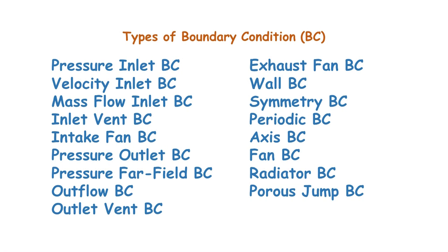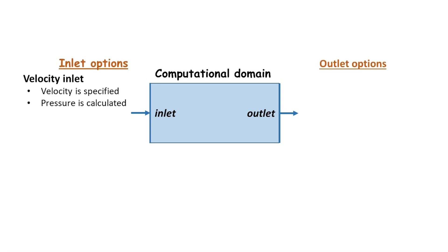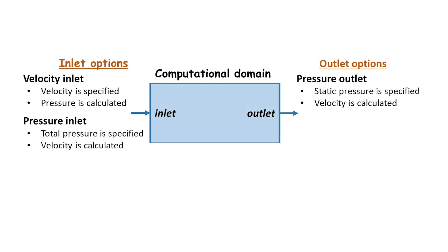Depending on the CFD package, there are several types of boundary conditions available. In this video I will only discuss those typically used in CFD modeling. Since the computational domain is treated as a control volume, it normally comprises one or more boundaries through which fluid enters or leaves the domain. The boundary conditions for these inflow and outflow boundaries are generally categorized as either velocity-specified conditions or pressure-specified conditions, because we can only choose to specify the velocity and let the CFD calculate the pressure, or specify the pressure and let the CFD calculate the velocity.